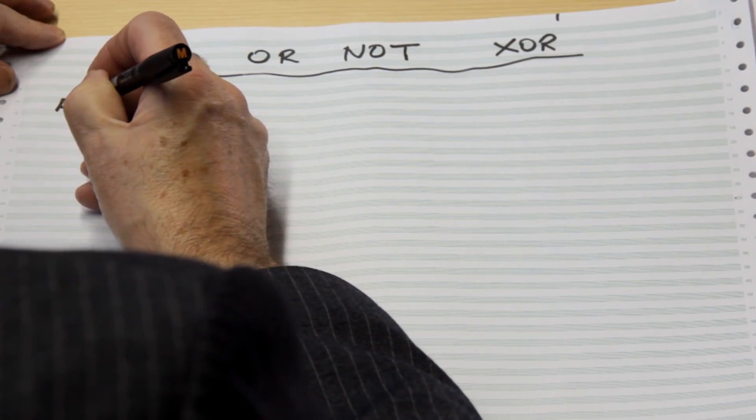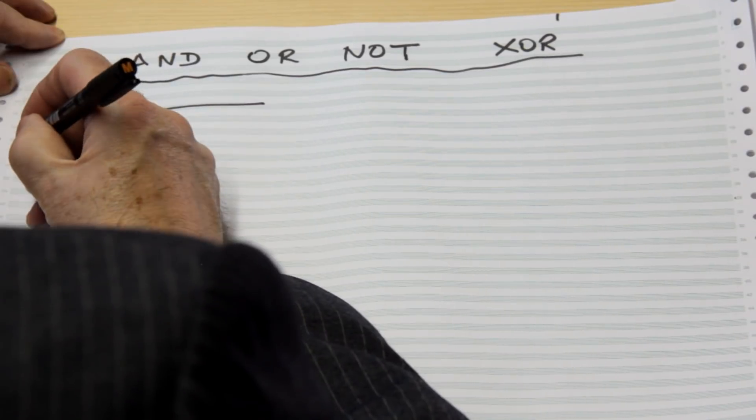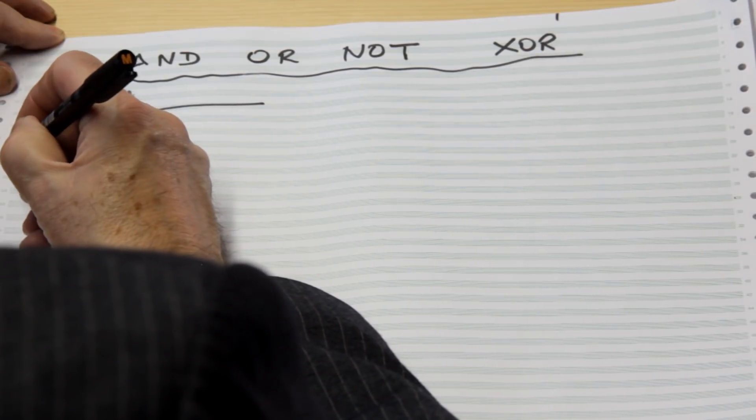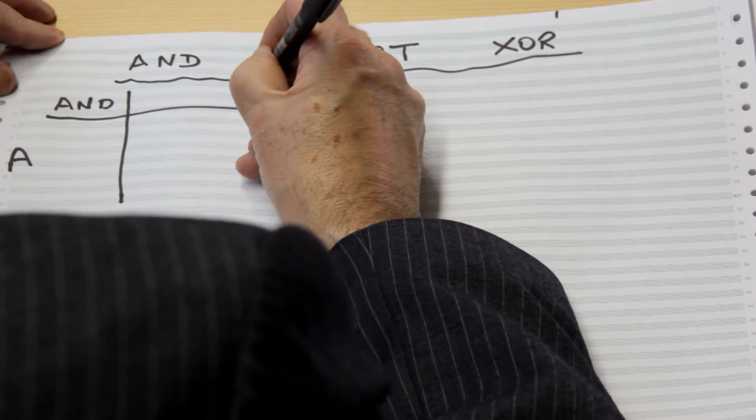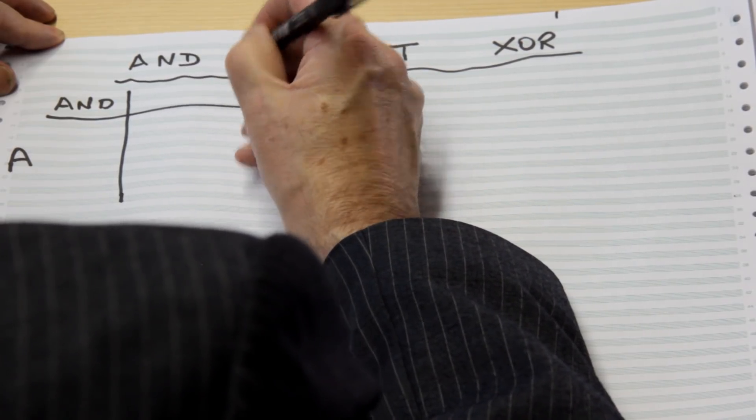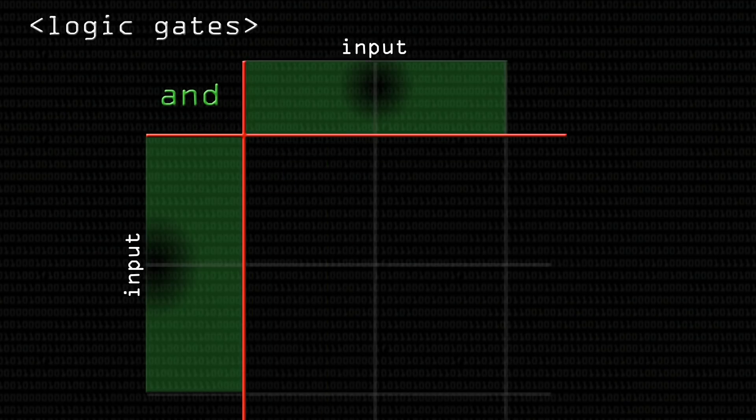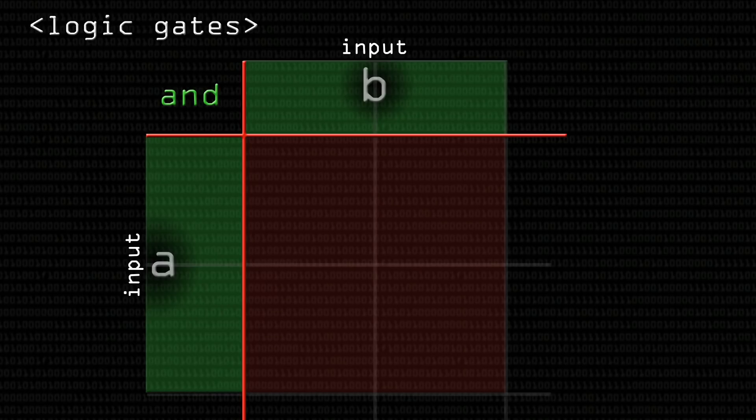I'm going to write out its truth table in my own way, which might be slightly different to the way other people lay it out. I like to lay these things out as a sort of square matrix. Let's call here on the left input A into my AND gate and up at the top I'm going to talk about input B.